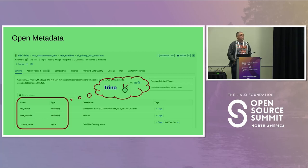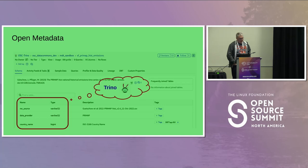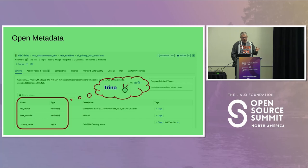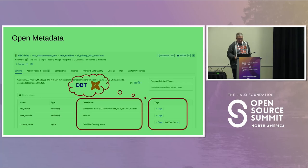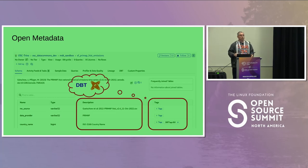For understanding the data and allowing people to search, the core right now is Open Metadata. It can pull basic things like column names and data types straight from Trino, but it does much more than that. If you're running data ingestion pipelines with DBT, it also allows you to add descriptive fields and searchable tags, enabling a more and more comprehensive searchable metadata environment.